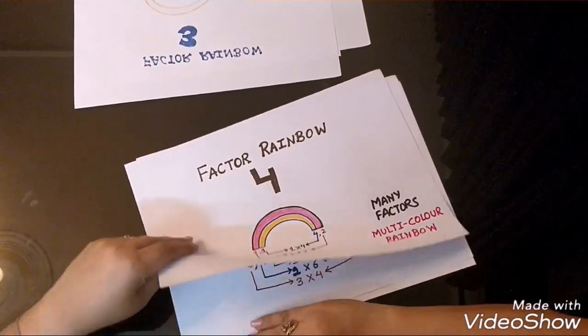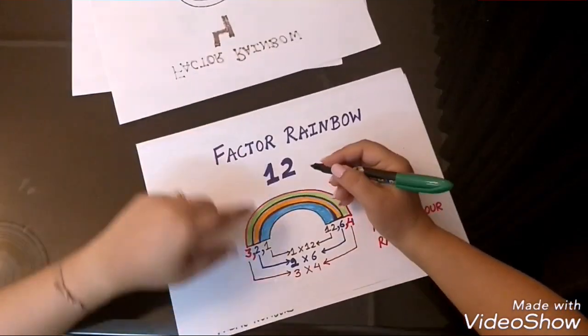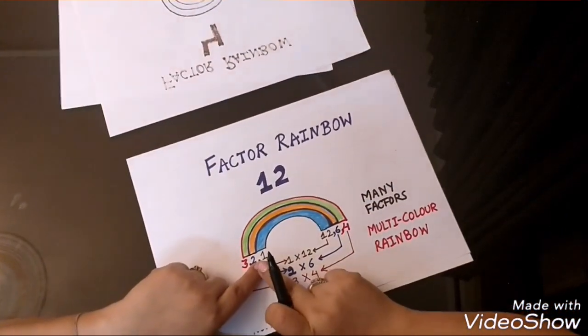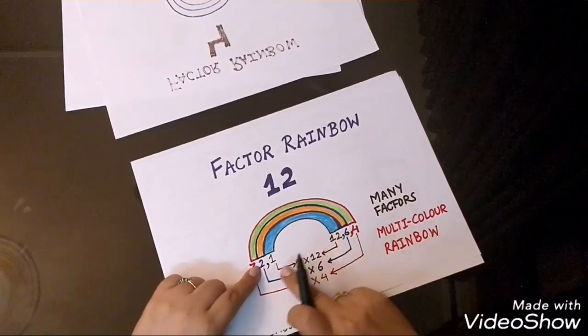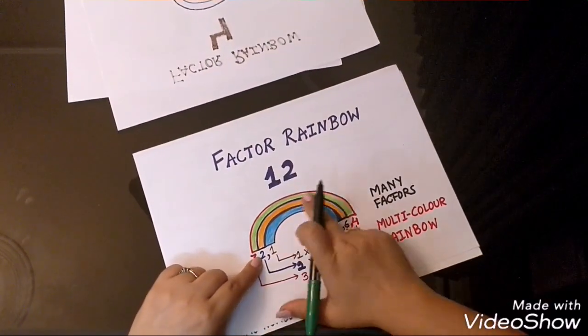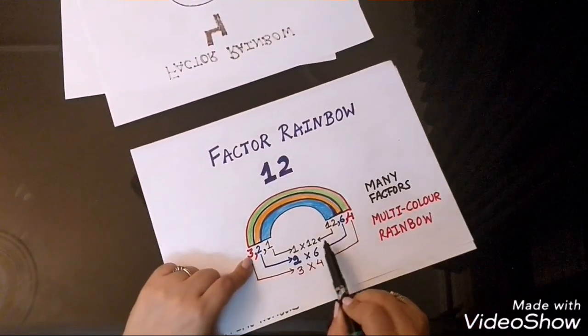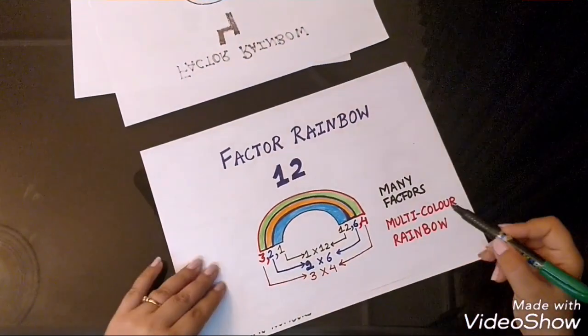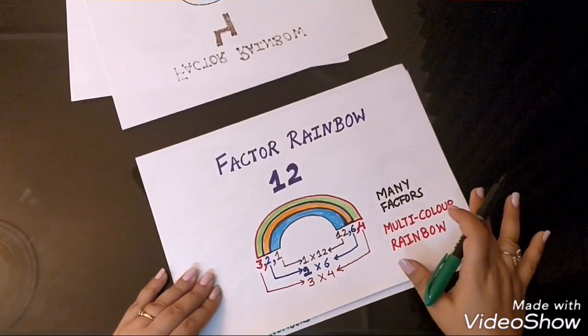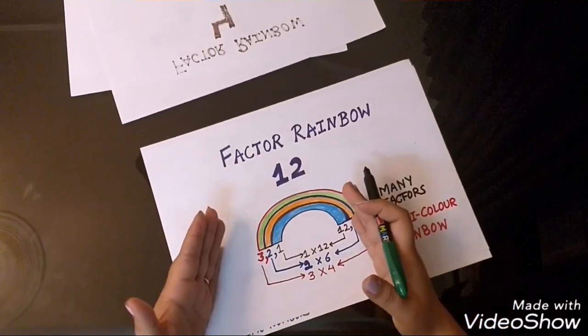Now, let's move to the number 12. How do I get 12? I get 12 by multiplying 1 by 12. 2 multiply by 6 is also 12. 3 multiply by 4 is also 12. So, there are many factors of 12. Again, so this is a multi-color rainbow. So, there we have got now 2 rainbows.